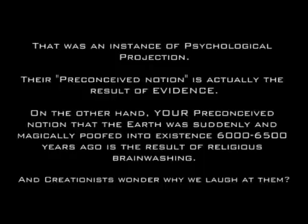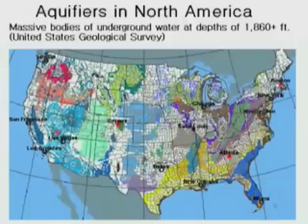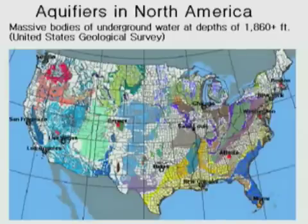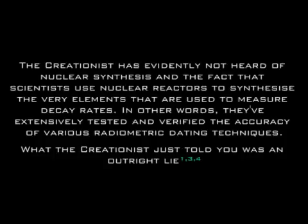And creationists wonder why we laugh at them. By evolutionist scientists who tell you that these absurd and completely flawed radiometric dating processes — that was a repeat assertion, and again it was made without providing any evidence — which are not capable of telling us how much of an element existed on the Earth at the beginning of its creation, which we have no way of knowing. The creationist has evidently not heard of nucleosynthesis and the fact that scientists use nuclear reactors to synthesize the very elements that are used to measure decay rates. In other words, they have extensively tested and verified the accuracy of various radiometric dating techniques. What the creationist has told you is an outright lie.